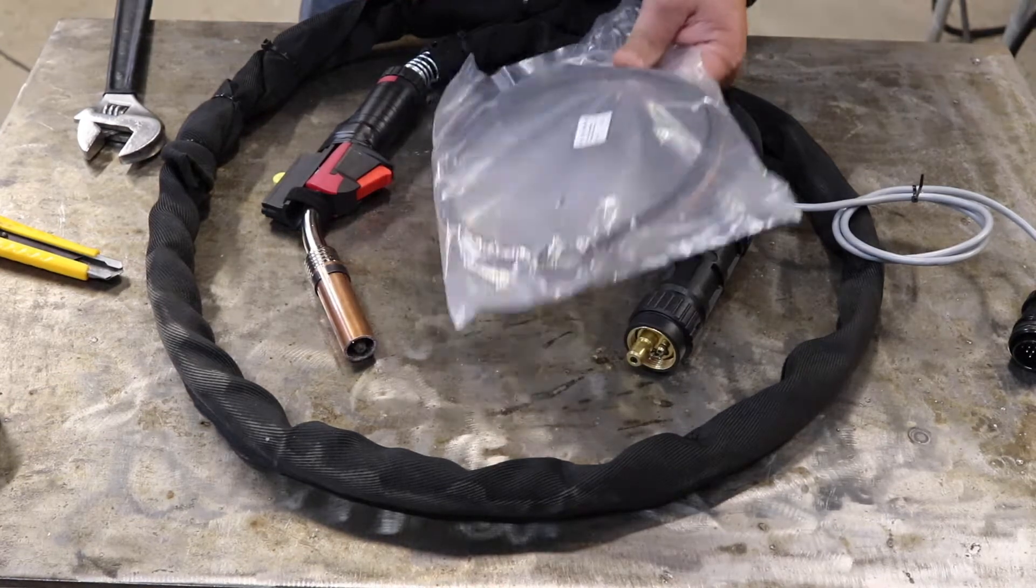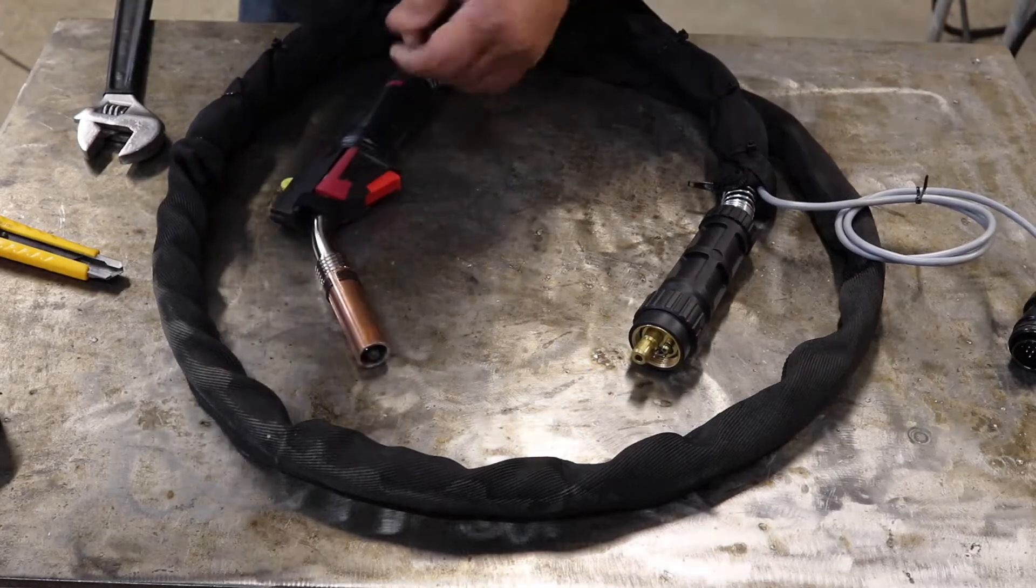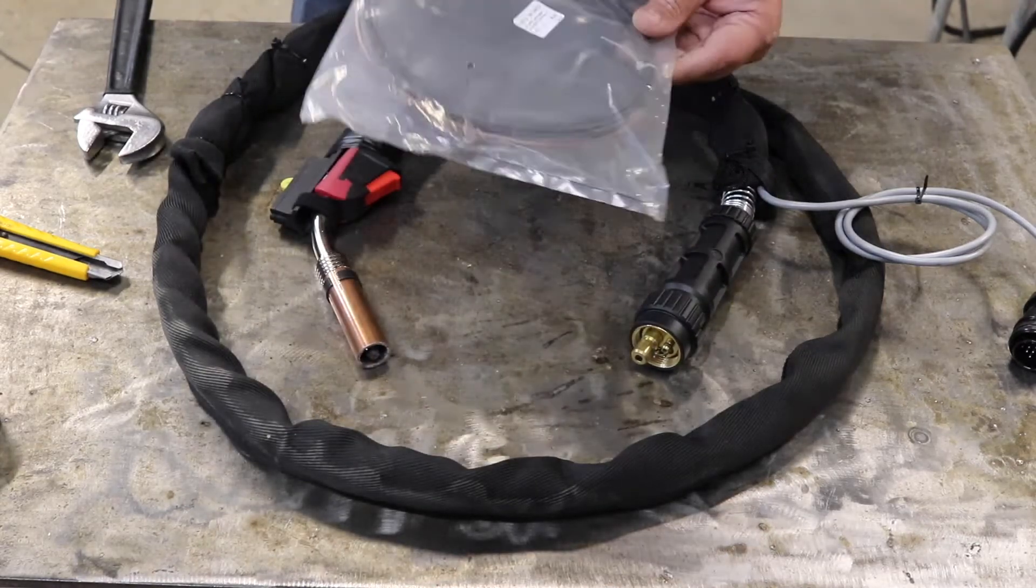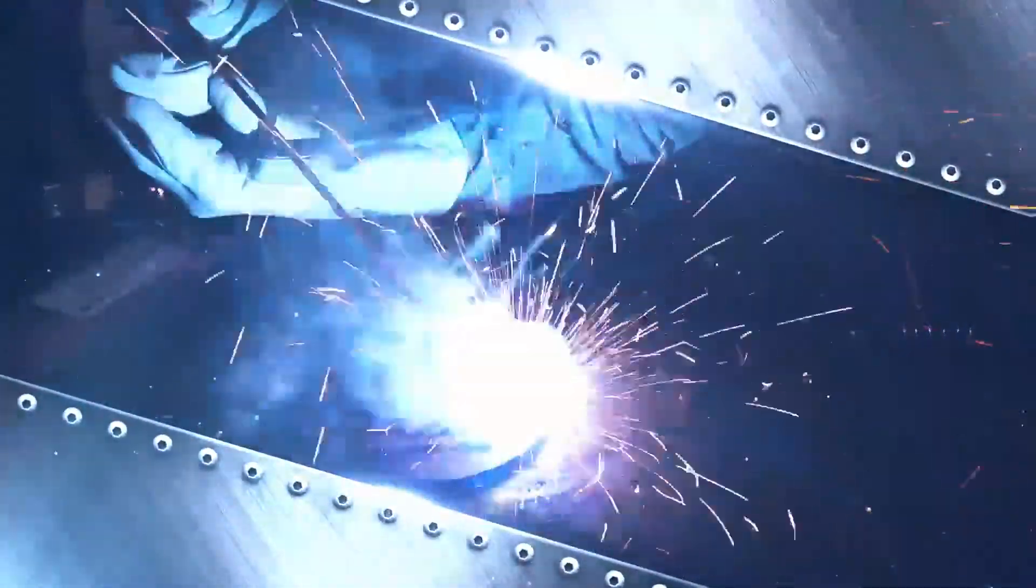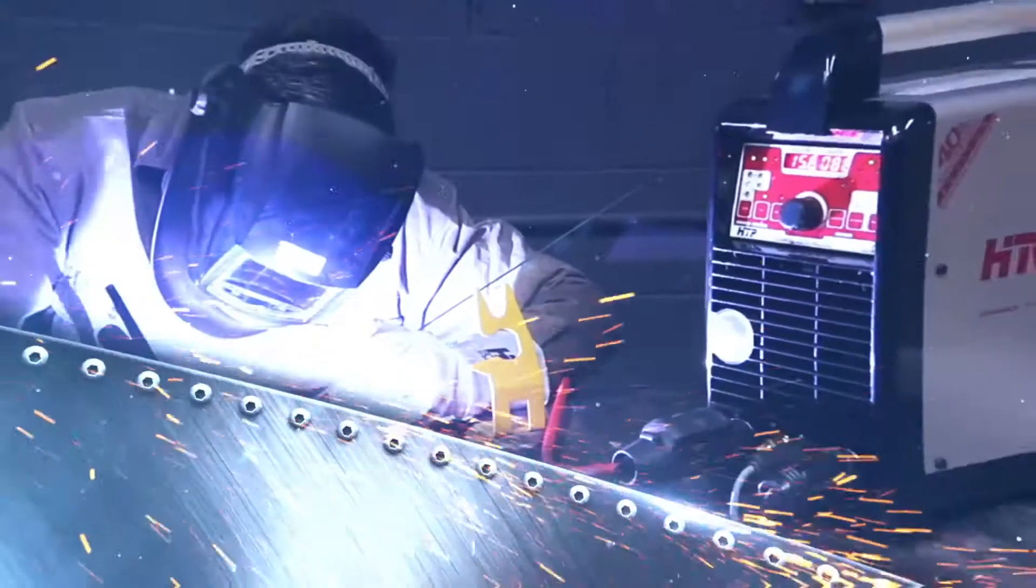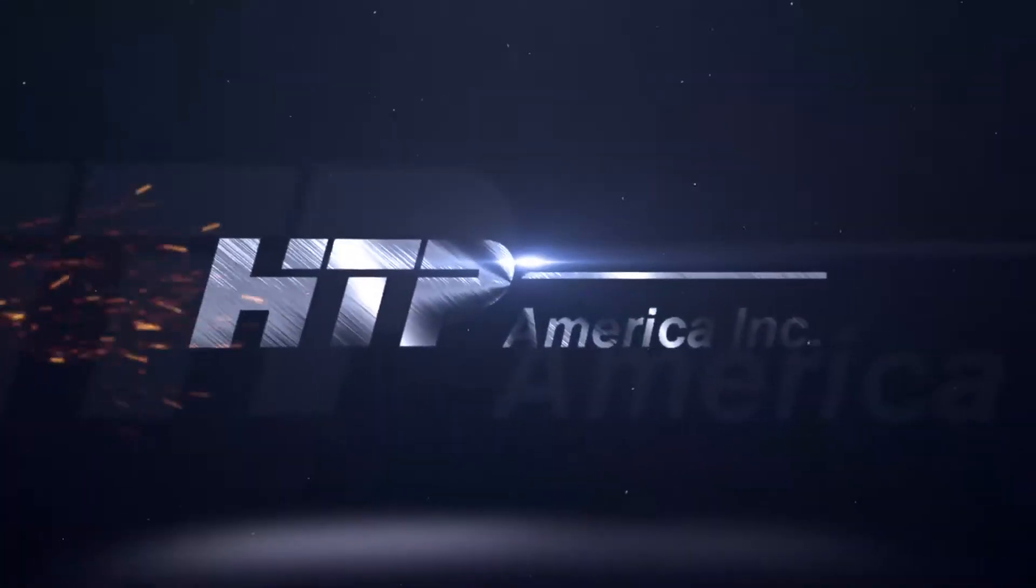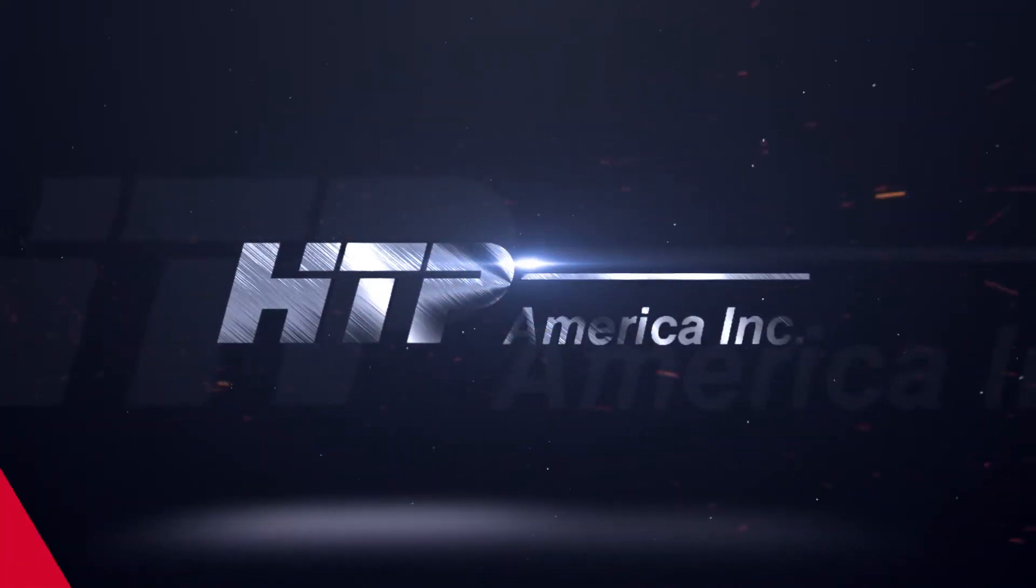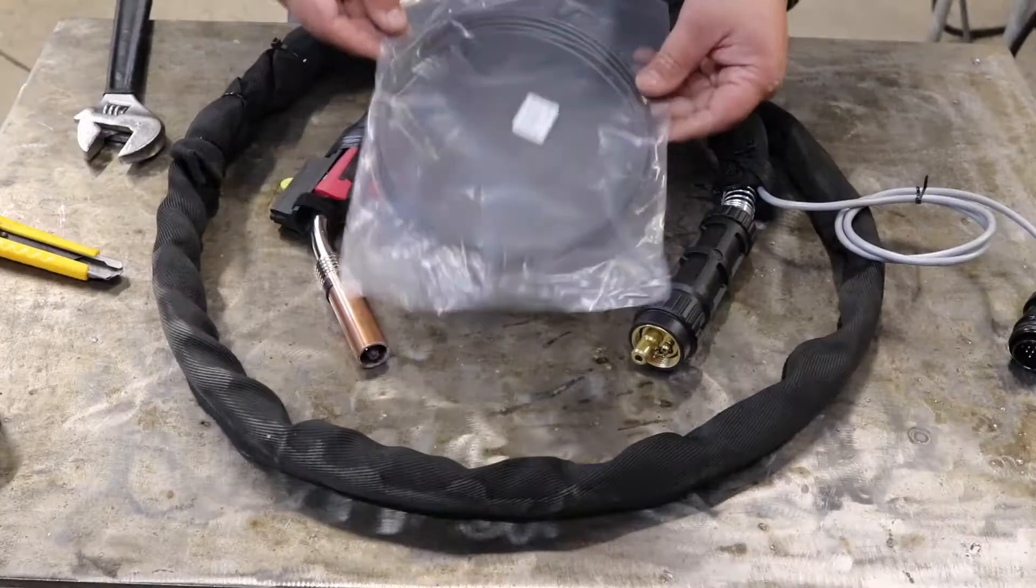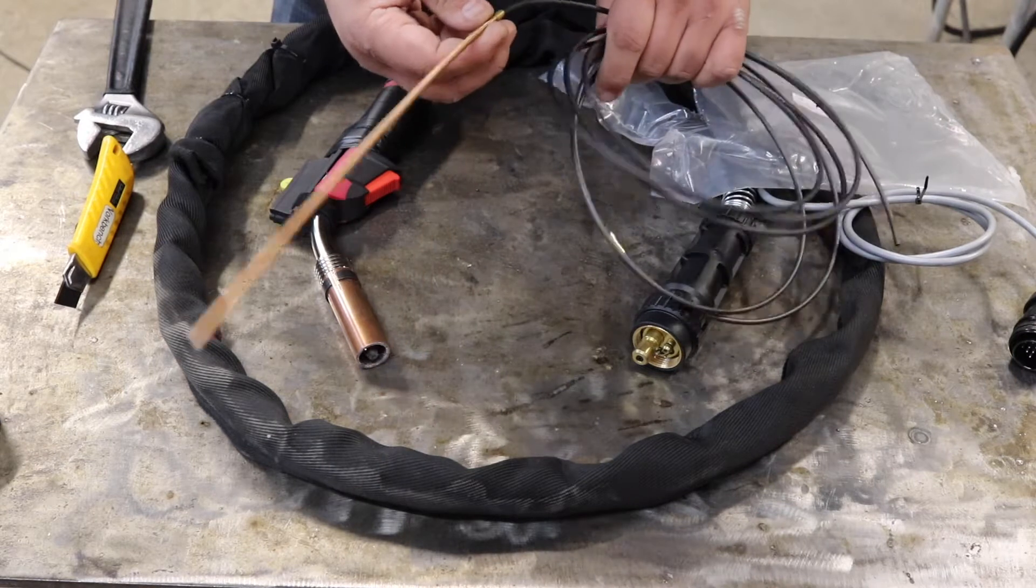I'm changing a carbon graphite liner in a 26080 or 26100 gun. That's a replacement liner. It comes with a brass neck liner attached to it.